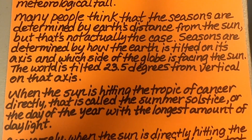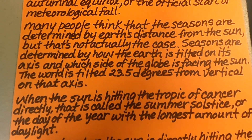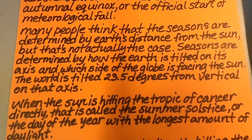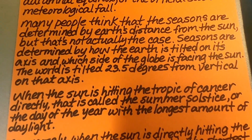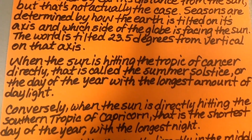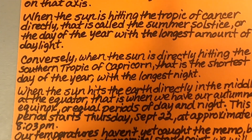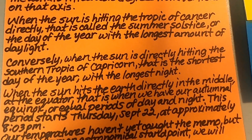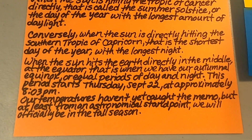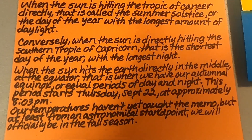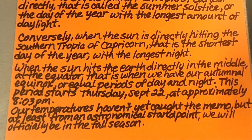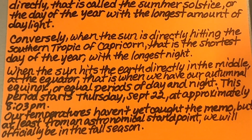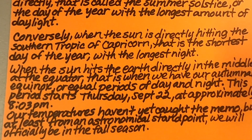When the sun is hitting the Tropic of Cancer directly, that is called the summer solstice, or the day of the year with the longest amount of daylight. Conversely, when the sun is directly hitting the southern Tropic of Capricorn, that is the shortest day of the year with the longest night. When the sun hits the Earth directly in the middle of the equator, that is when we have our autumnal equinox — equal periods of day and night. This period starts Thursday, September 22 at approximately 8:03 p.m.